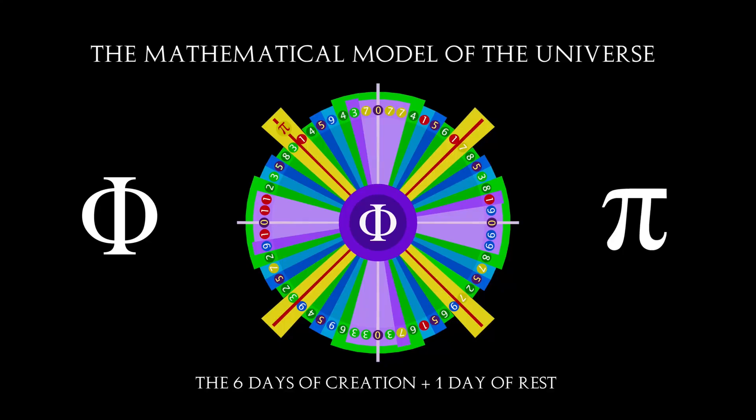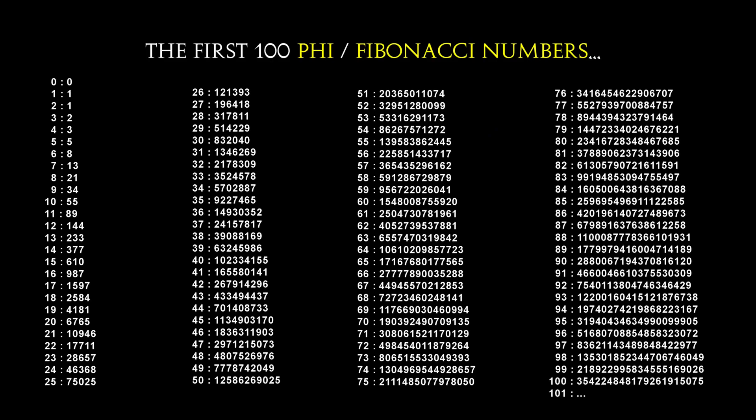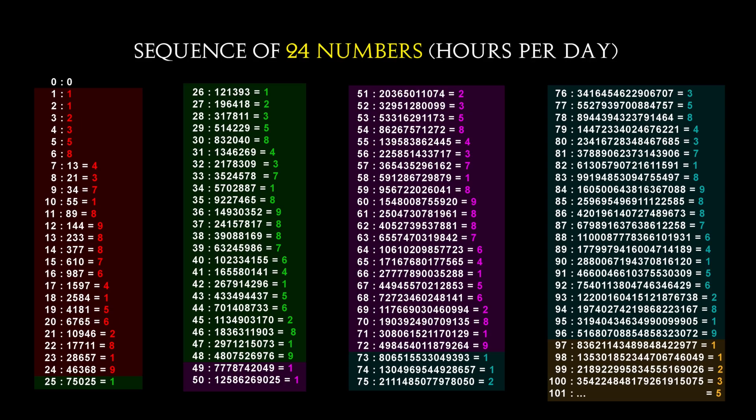The mathematical model of the universe equals six days of creation plus one day of rest. Here are the first hundred phi numbers, also known as the Fibonacci sequence. Reduce the numbers down to one digit, their digital root, to find a sequence of 24 numbers. This repeats infinitely and coincides with there being 24 hours in a day.